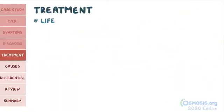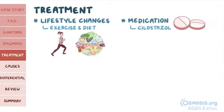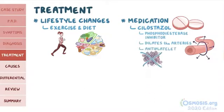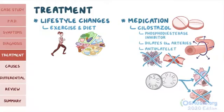For treatment, lifestyle changes like exercise programs and diet are the first steps. For medication, cilostazol, a phosphodiesterase inhibitor, can directly dilate the arteries, easing symptoms. In addition, it's an antiplatelet, which can prevent platelet aggregation and decrease the risk of thrombosis. Even without cilostazol, they should still take an antiplatelet medication like aspirin as prevention for coronary artery disease and stroke.